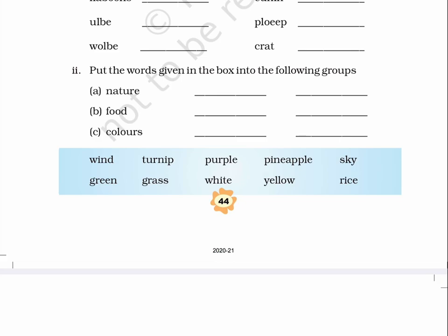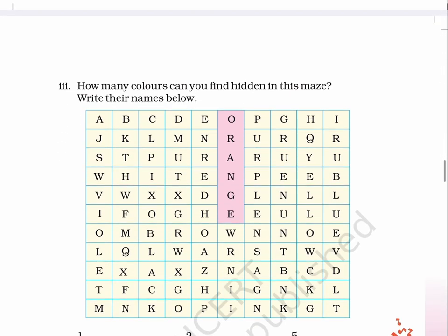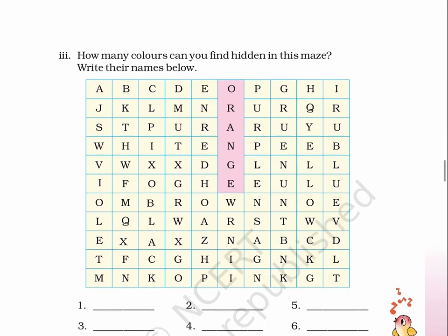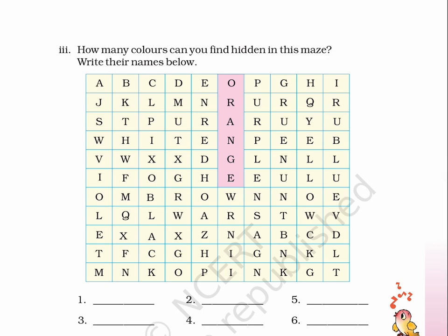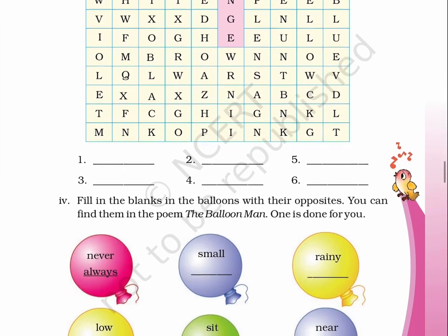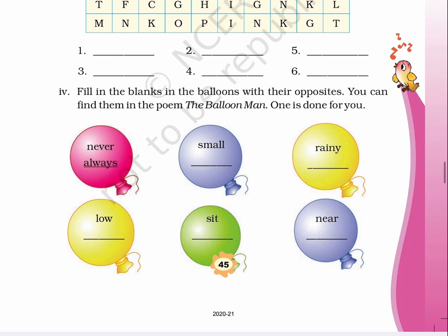Page 45. Question 3: How many colours can you find hidden in this maze? Write their names below. One has been done for you already. Sixth column: O-R-A-N-G-E, Orange. One, dash. Two, dash. Three, dash. Four, dash. Five, dash. Six, dash.